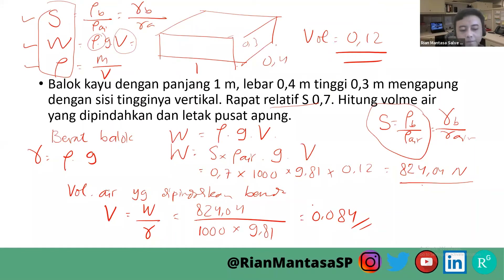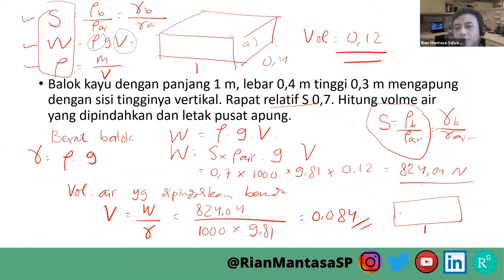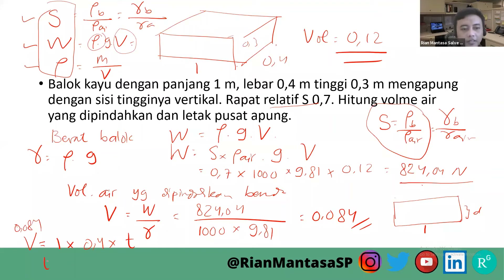Kemudian kita sketsa dulu. Kita kan punya panjangnya 1, lebarnya masih sama 0,4, kita belum tahu tingginya yang basah berapa. Kita udah punya volume 0,084, sehingga volume sama dengan panjang 1 × lebar 0,4 × tinggi yang basah belum diketahui sama dengan 0,084. Sehingga tinggi yang basah, yang kena air itu, adalah sebesar 0,21 meter.